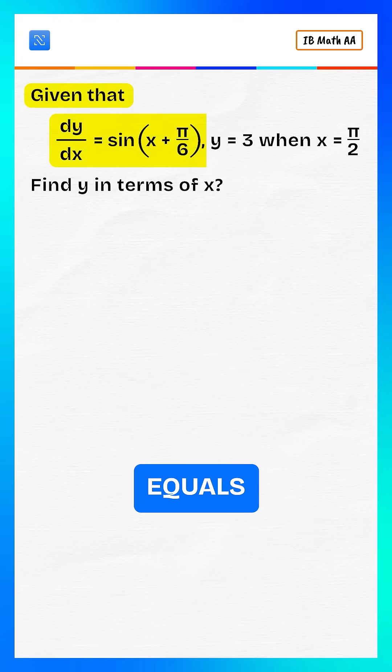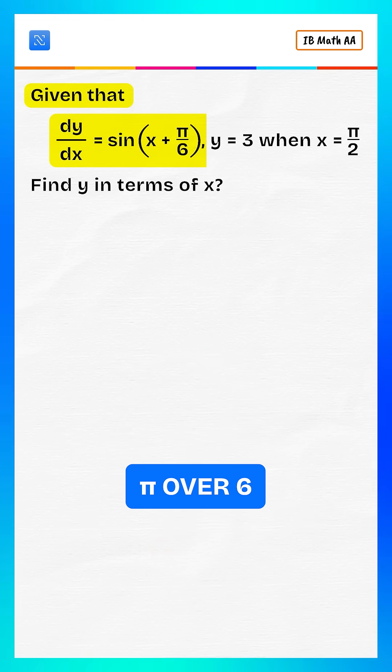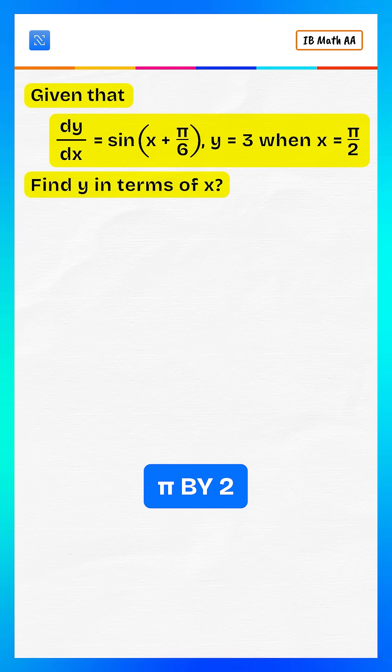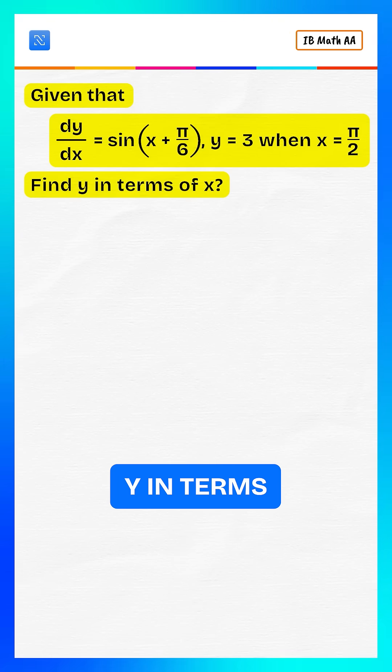Given dy by dx equals sine of x plus pi over 6 and y equals 3 when x is pi by 2, can you find y in terms of x?